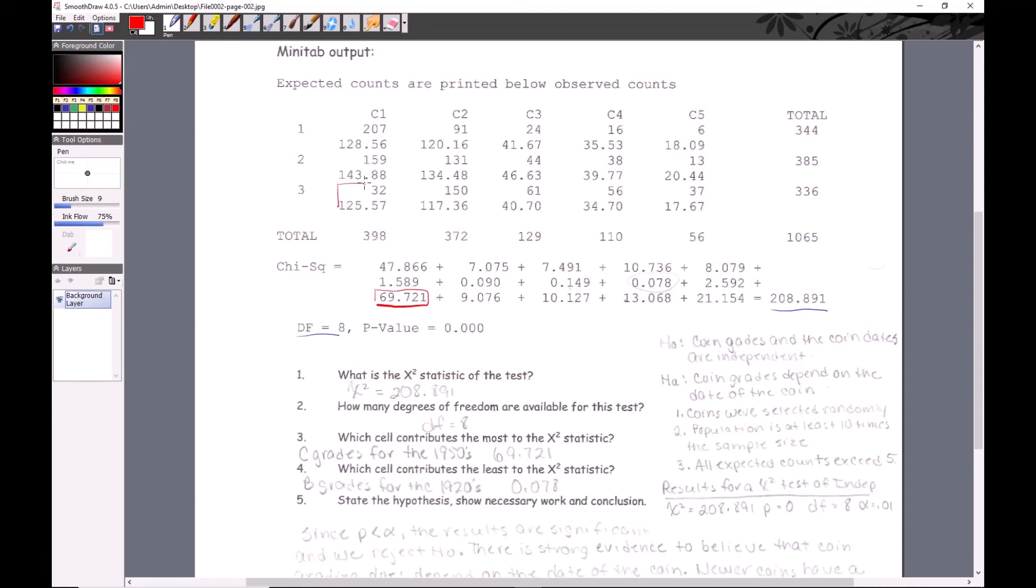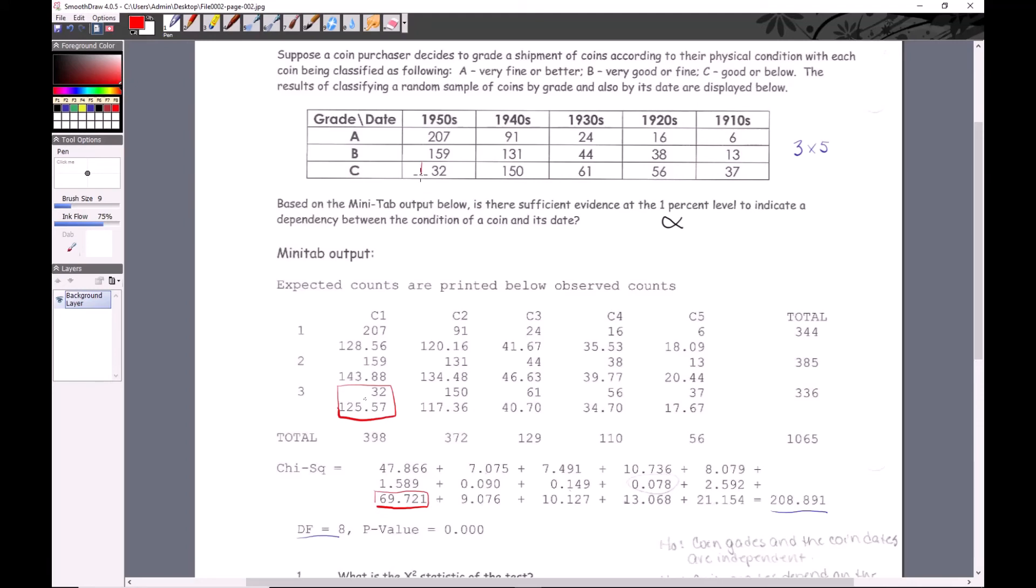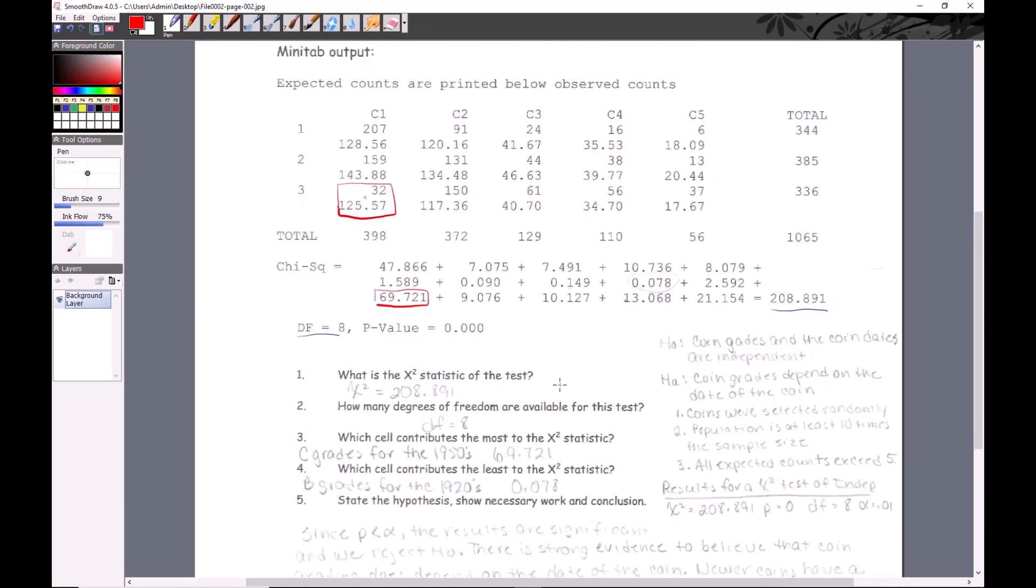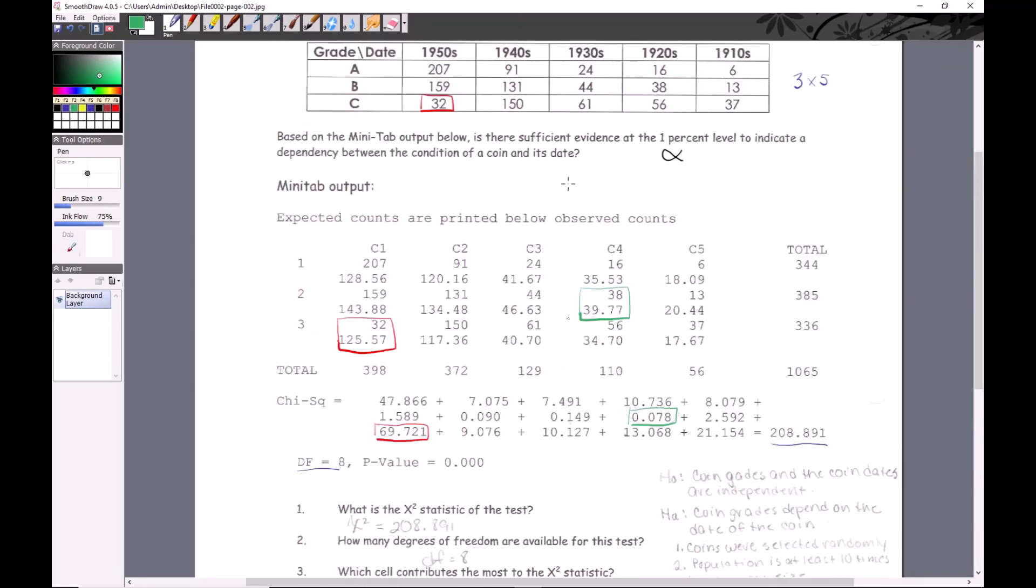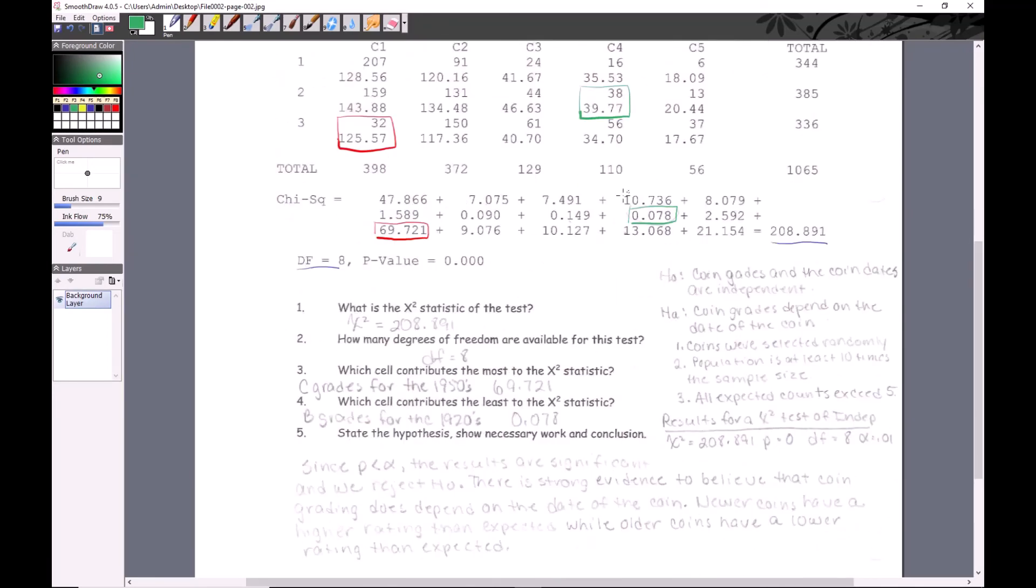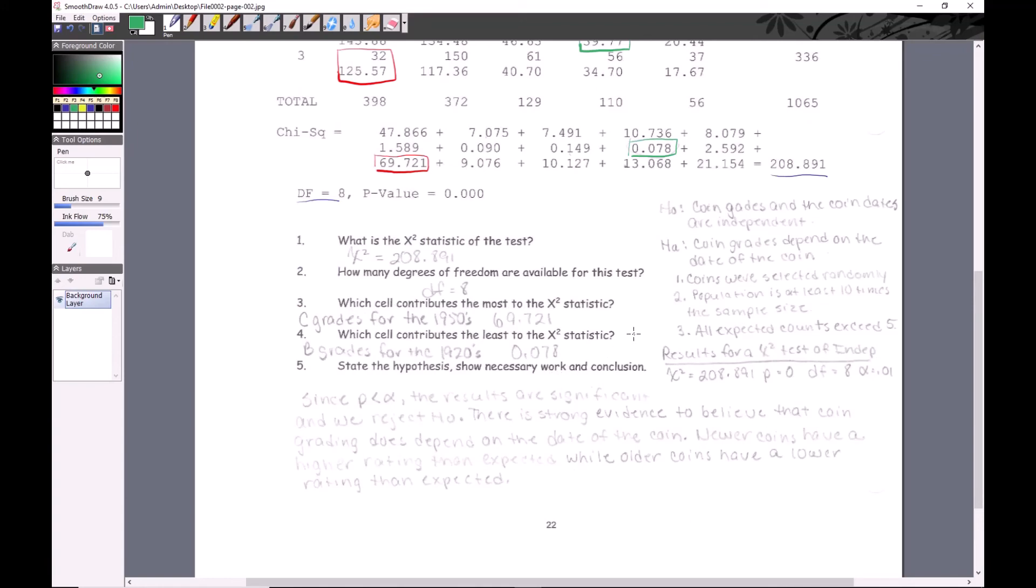That goes along with this here - it's the lower left, so that should go along with this here. Those are coins graded C, at a C level, from the 1950s. Which cell contributes the least to the chi-square statistic? This one's a little harder to find, but I believe it's this one. That matches up to this because they're all in the same dimensions, and that should match up to this, which are the B-rated coins from the 1920s.